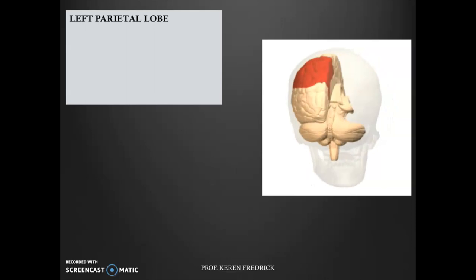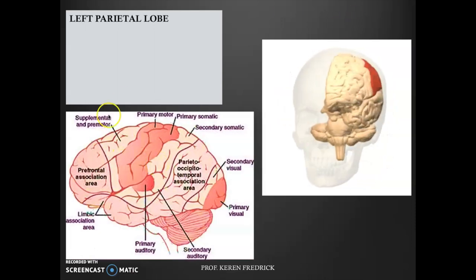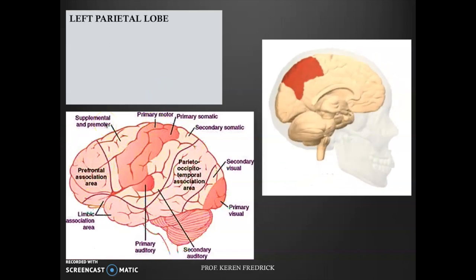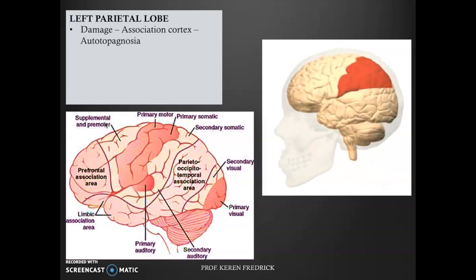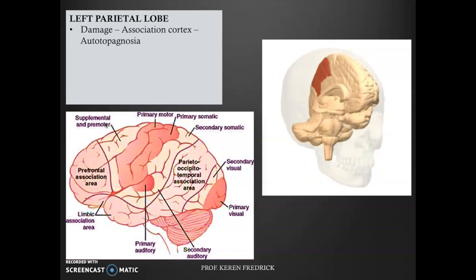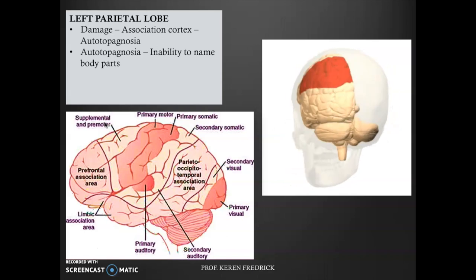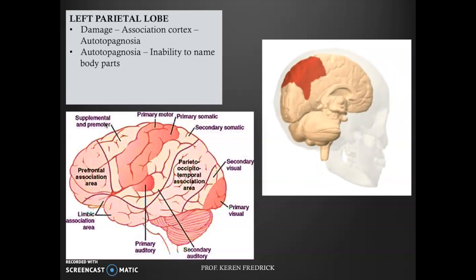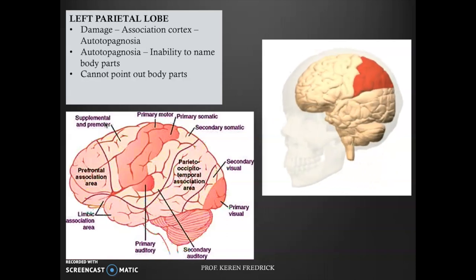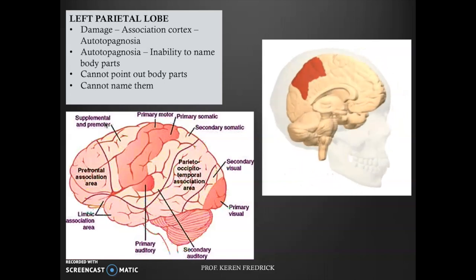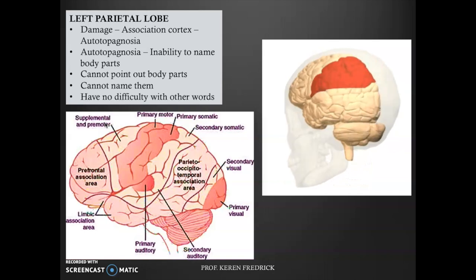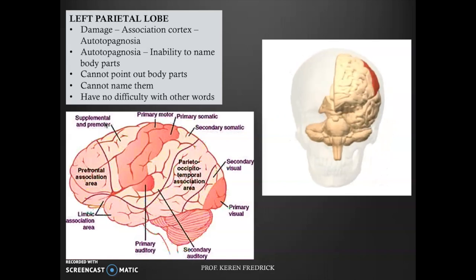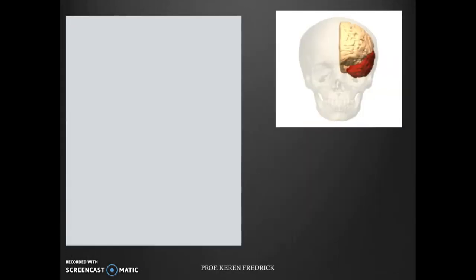Next, the left parietal lobe. When there is damage to the association cortex of the left parietal lobe, the person goes through a disorder called autotopagnosia. This disorder is characterized by an inability to point out or name their own body parts or body parts in general. They can talk about other words very normally, but when asked to point out their own body parts they find it really hard.